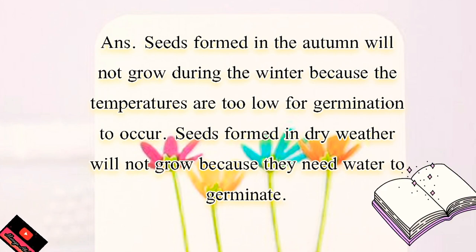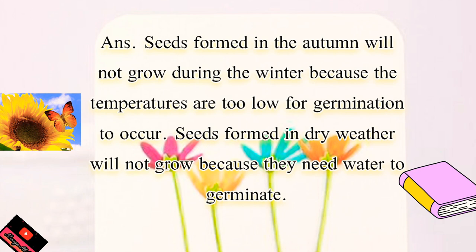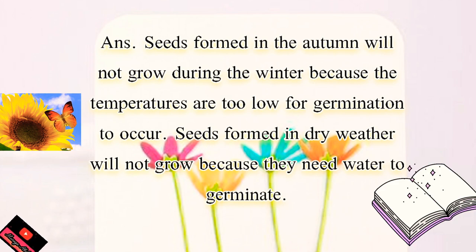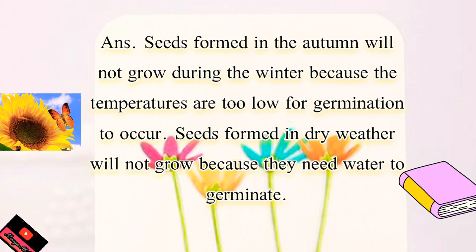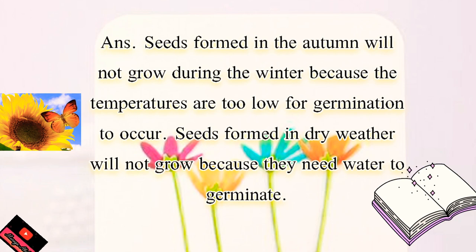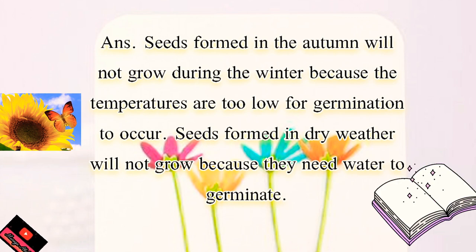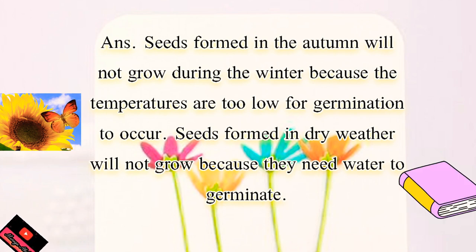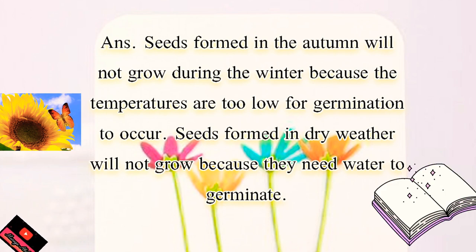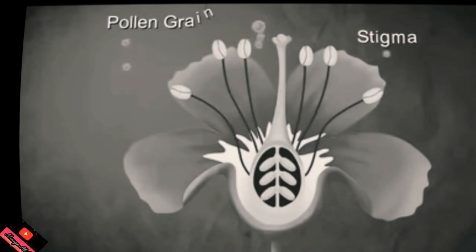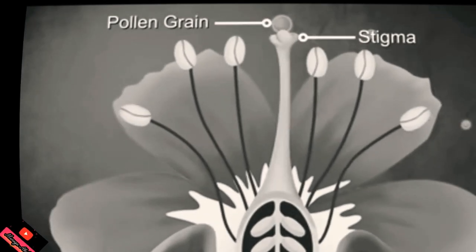You know very well that in winter the temperature is low and in autumn it is dry. In both conditions, seeds do not germinate, so they will definitely germinate in spring or the rainy season. The answer is written here — you can add your own information as well. Now let's revise the process: a pollen grain falls on the stigma, a pollen tube develops and goes down into the style and into the ovary.